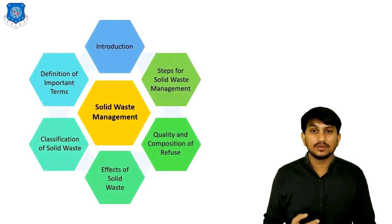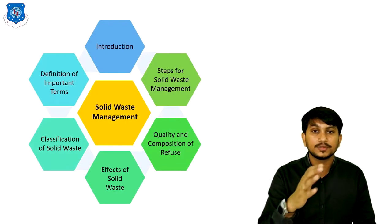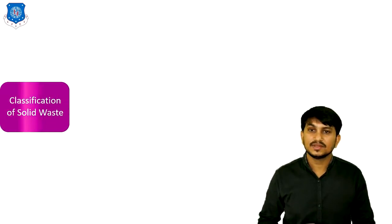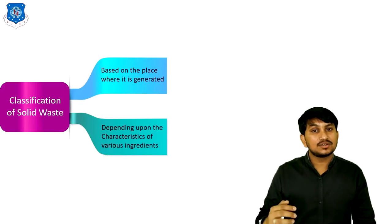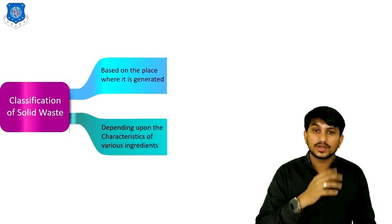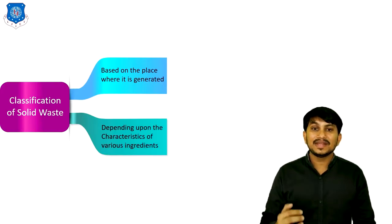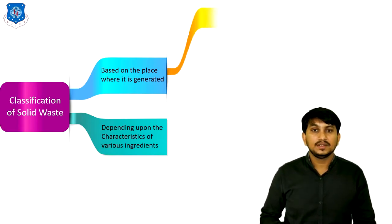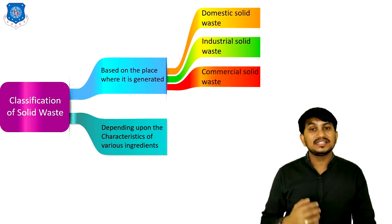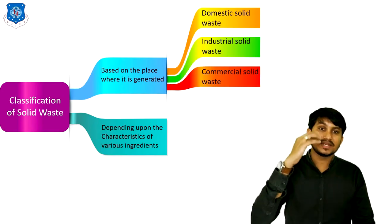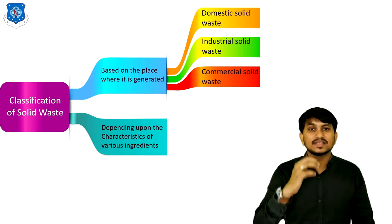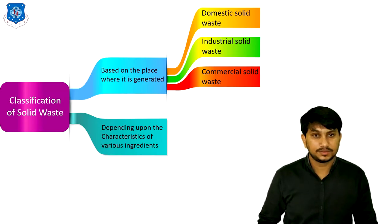That's all about various definitions of important terms related to solid waste. Now let's discuss the classification of solid waste. First, based on the place where it is generated, and second, depending upon the characteristics of various ingredients of solid waste. Based on place, it is divided into three types: Domestic solid waste, Industrial solid waste, and Commercial solid waste.